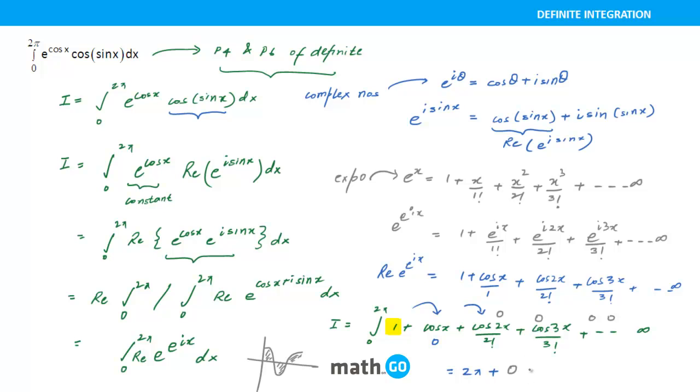So the answer that you are looking for is nothing but 2π, that's the beauty of this question. So the answer is nothing but 2π. And this is how you are going to find answers to these kinds of problems. So it's a beautiful problem to understand how complex numbers are used and then the exponential form. So two important things in this question: complex number usage in definite integration and exponential form usage in definite integration. So this is the kind of question that we are going to take in the advanced lecture series.